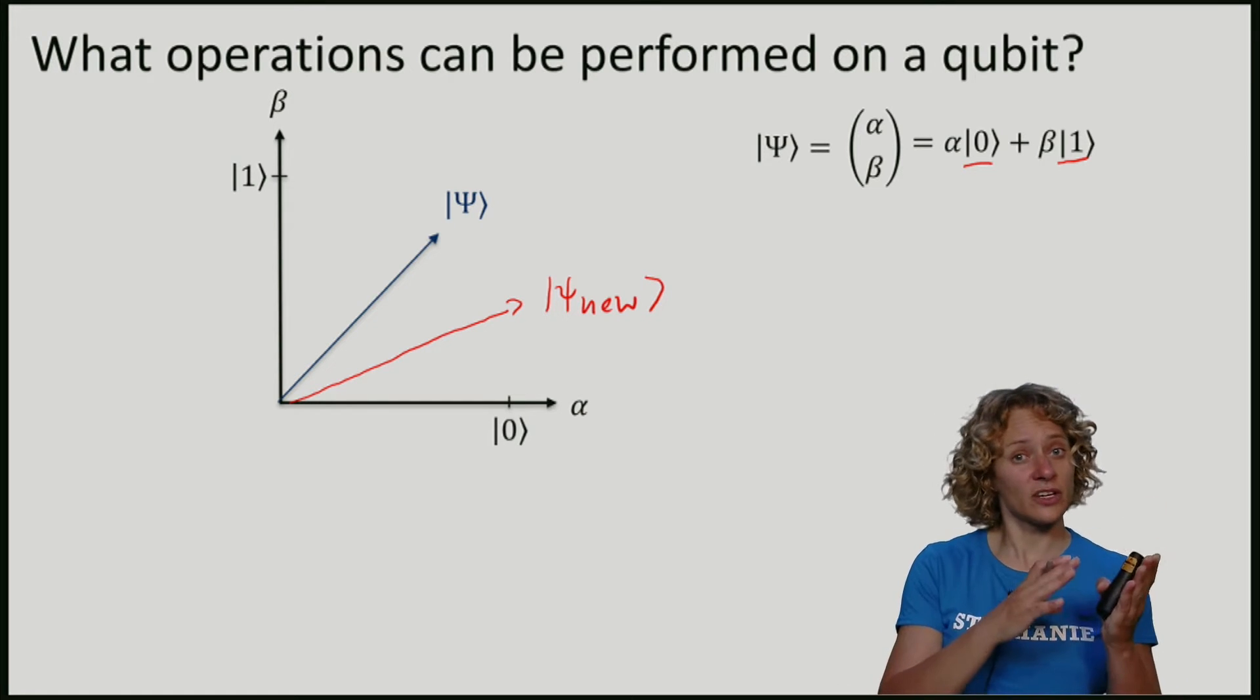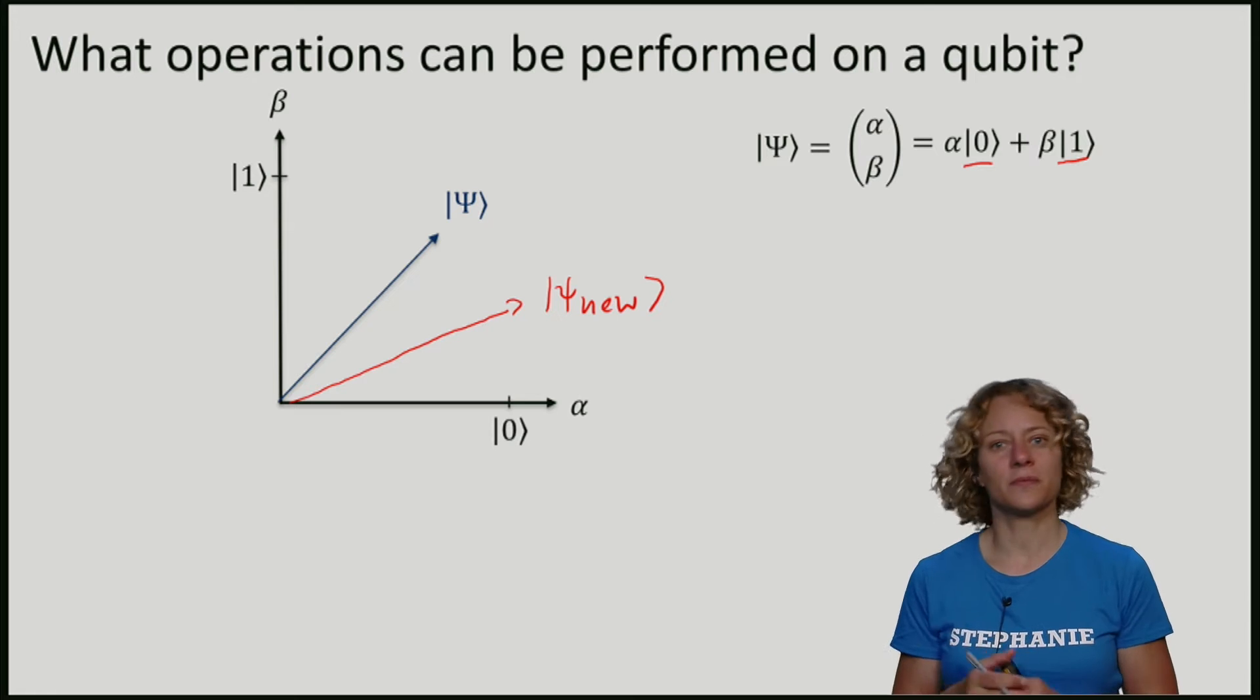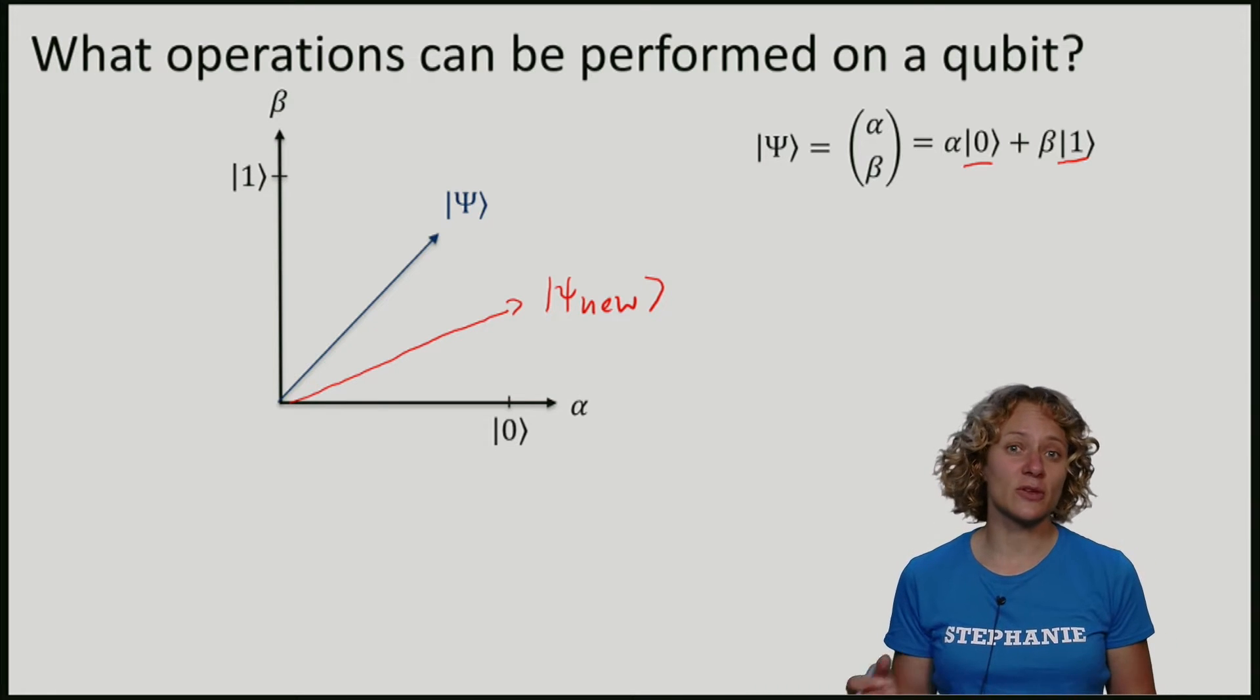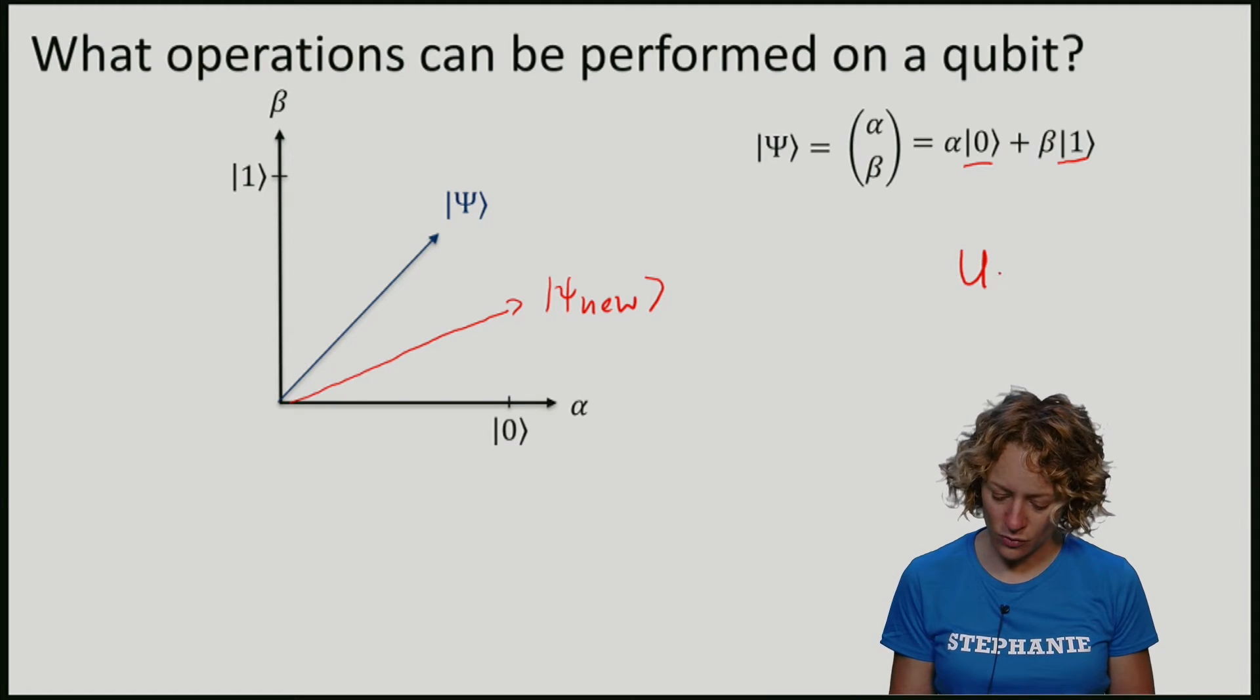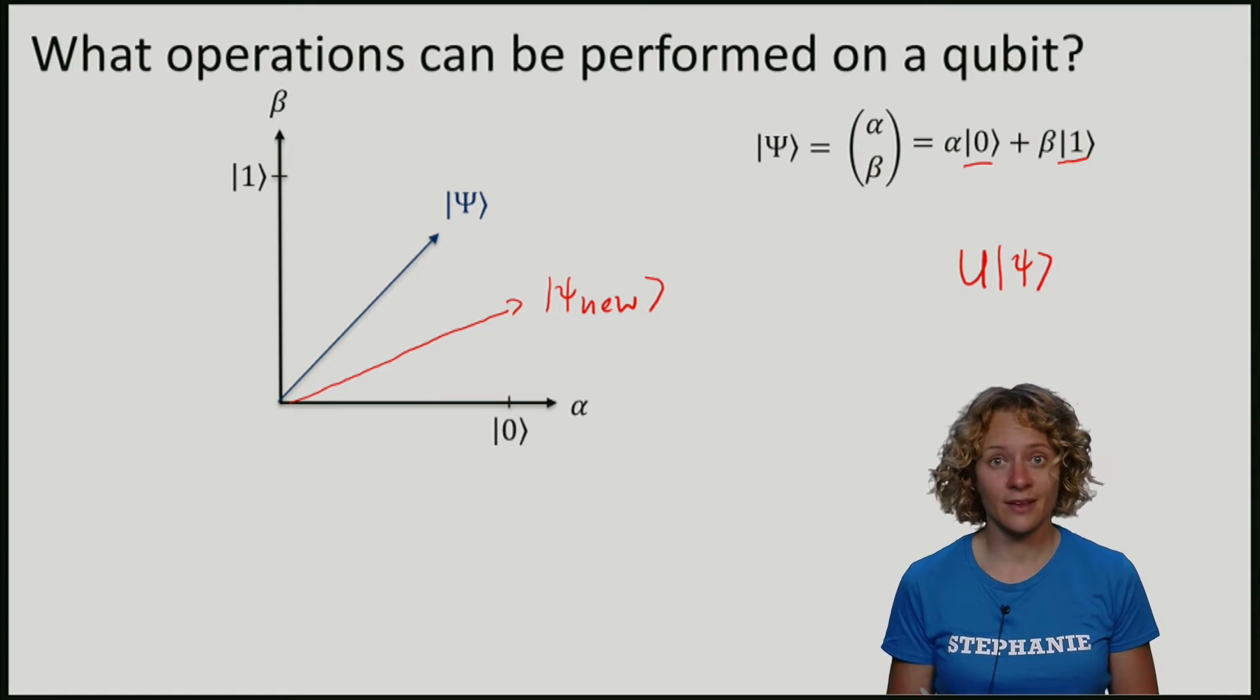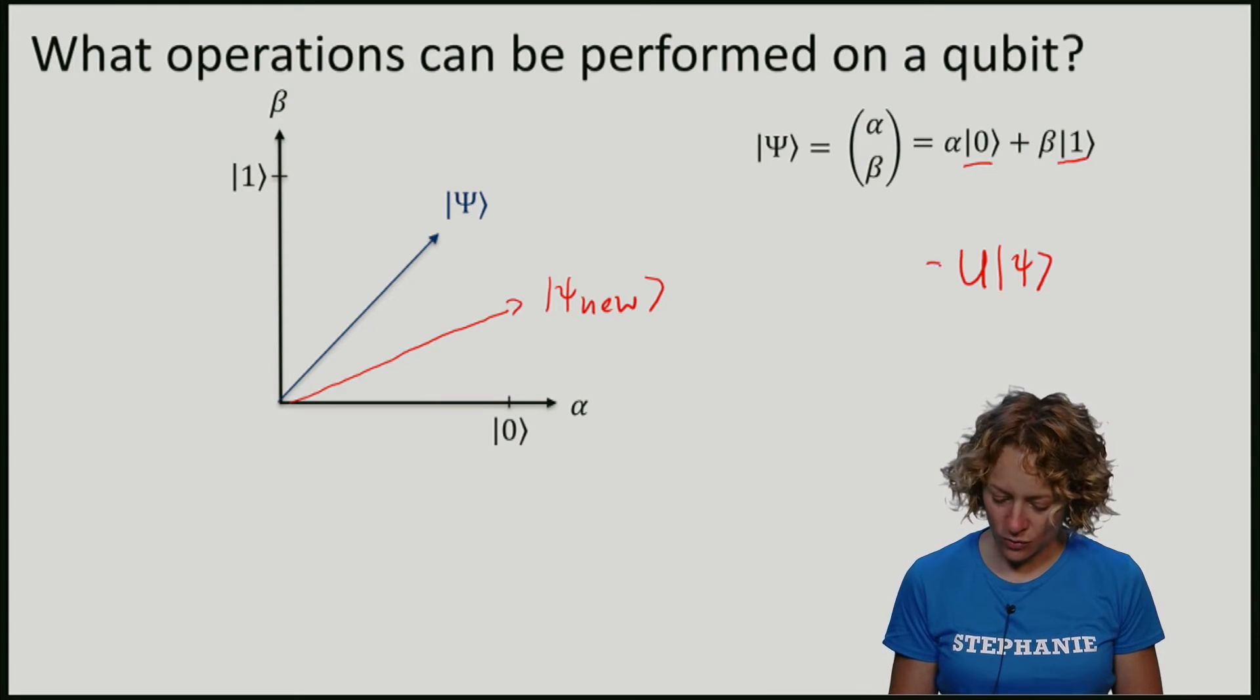We start with a vector and end with a vector, so it's natural that the transformation that we are going to apply is some matrix U applied to our starting qubit Psi, that gives us a new vector.